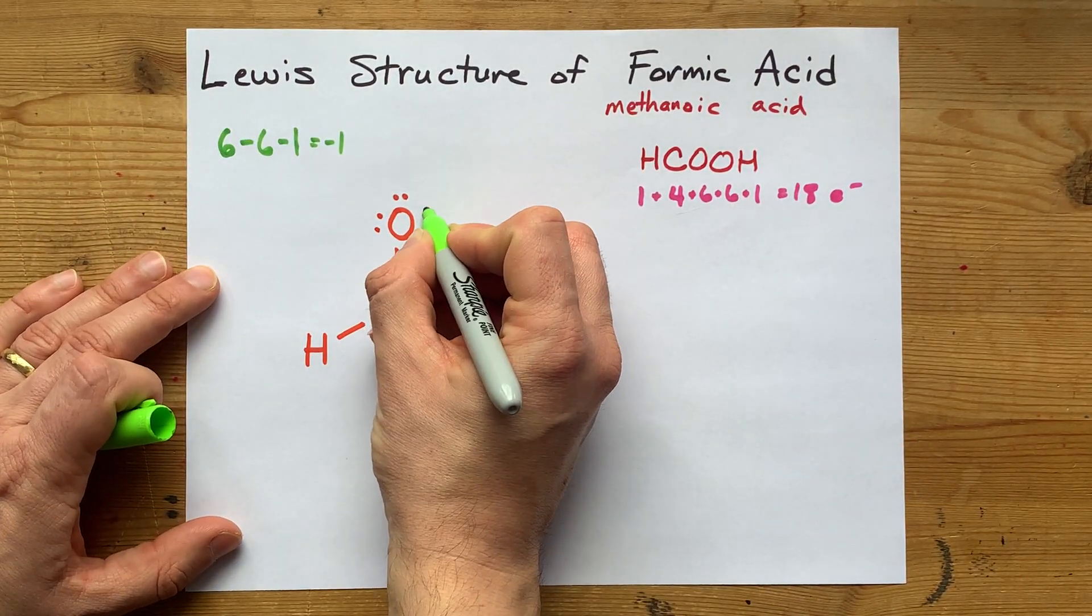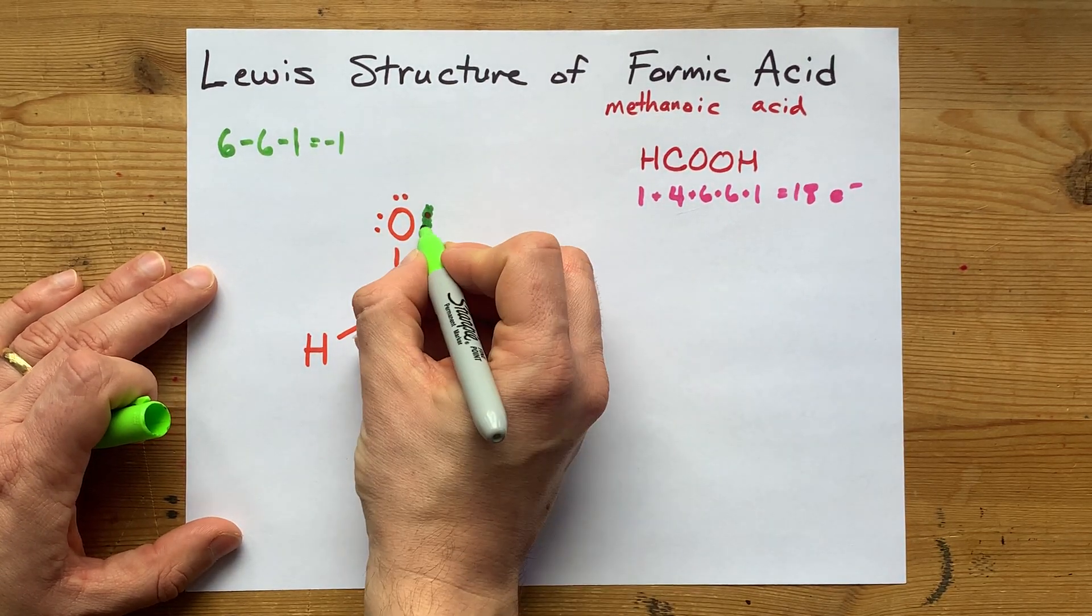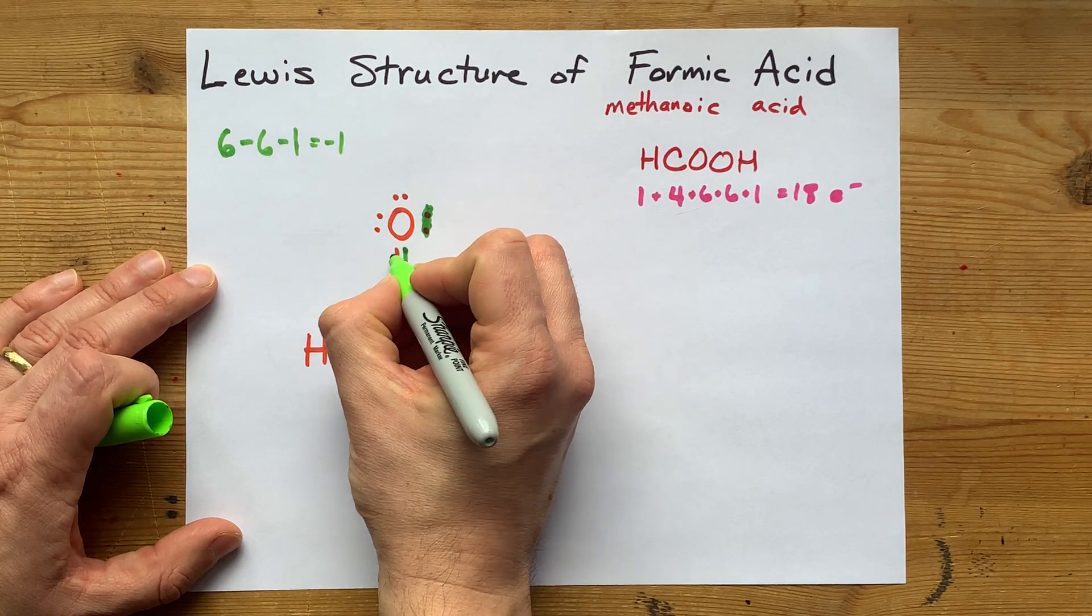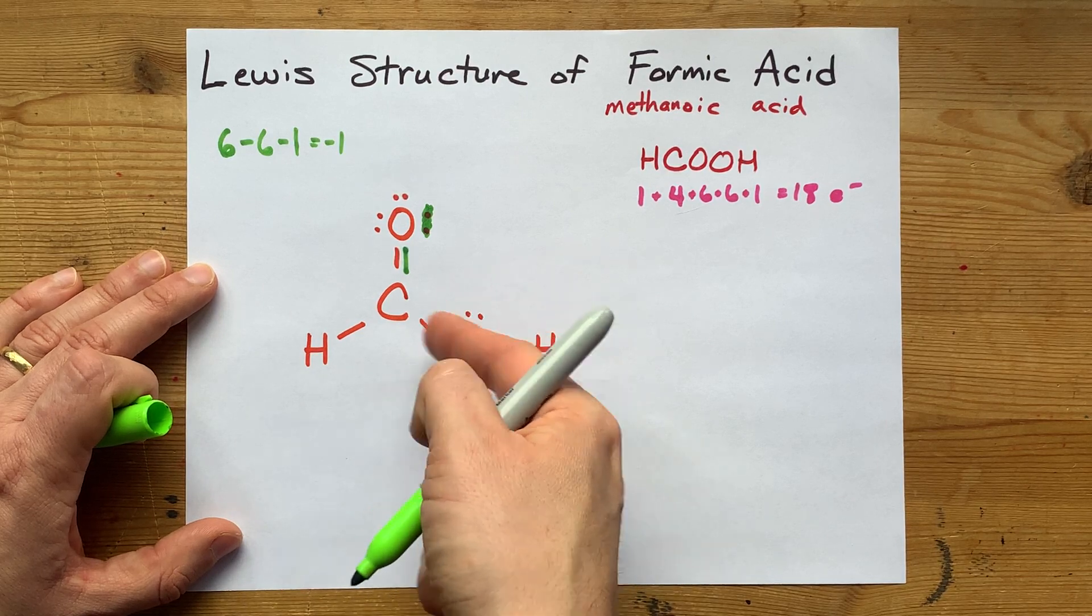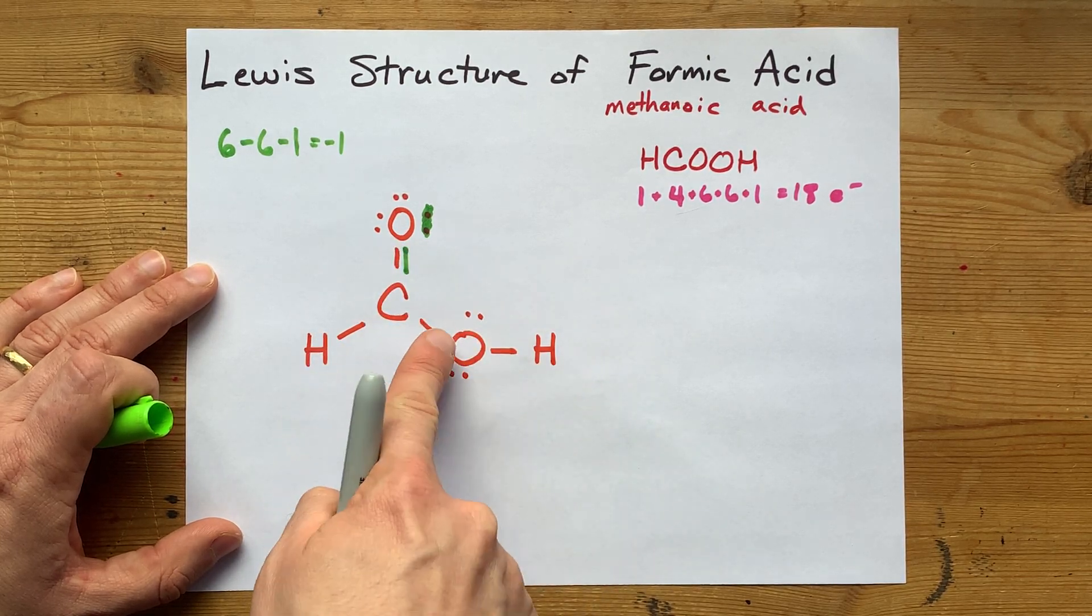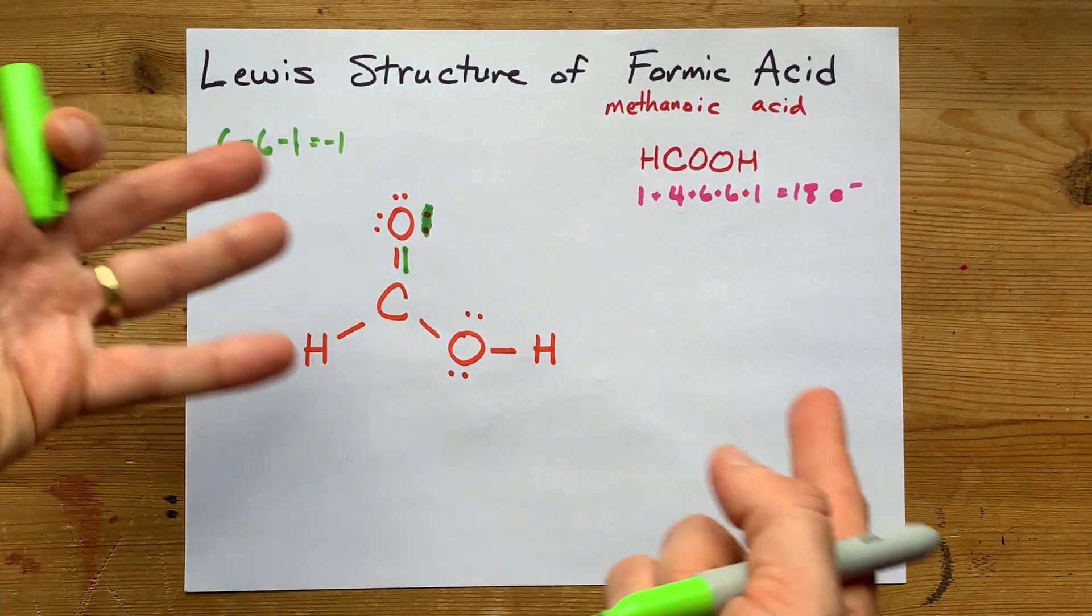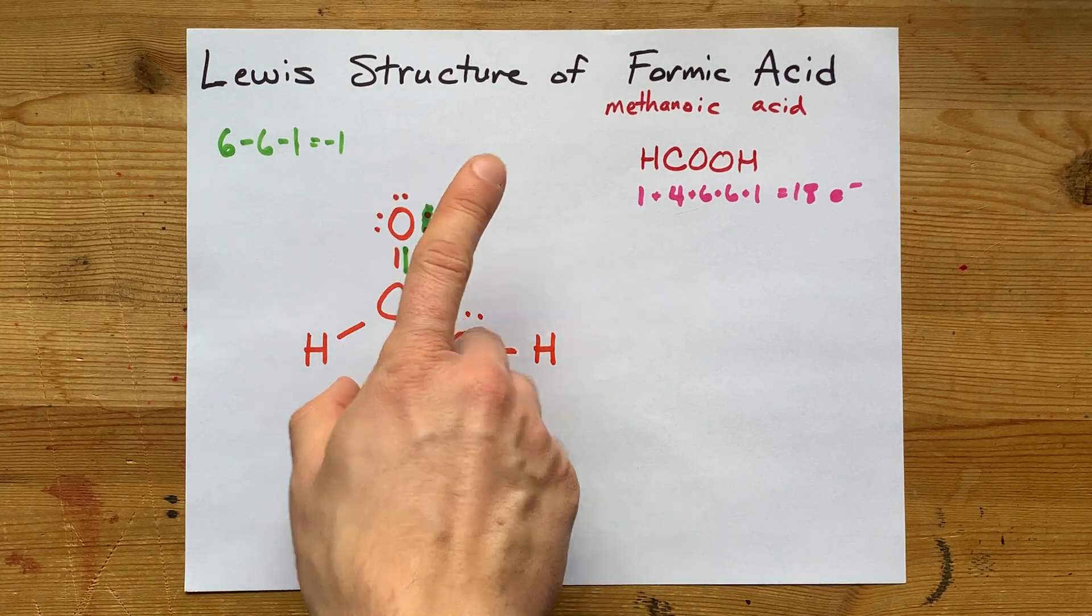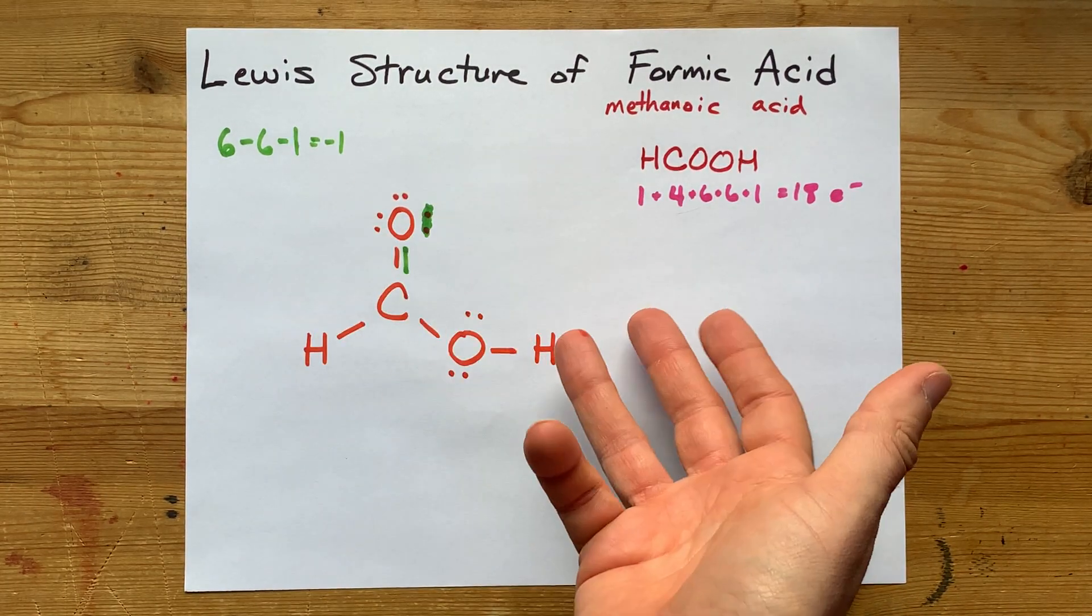In this case, I'm going to move this lone pair into the bond so that those electrons are now still belonging to the oxygen, but also they're now being shared with the carbon. Now carbon has eight electrons around it. That's a complete octet. And that's what I'm talking about. The oxygen still has eight electrons around it, so it's happy as well.